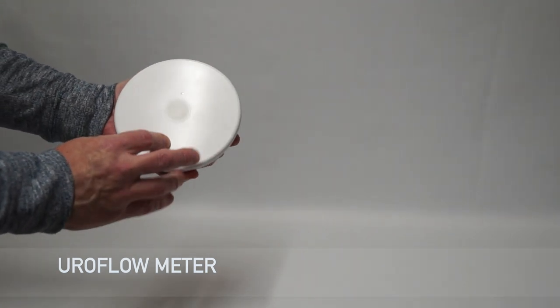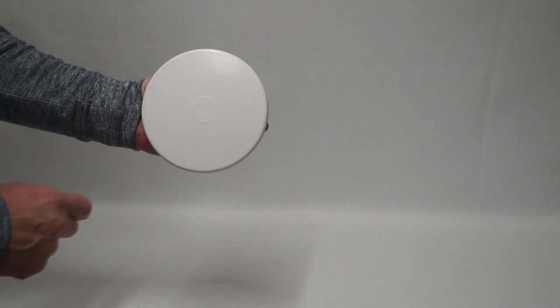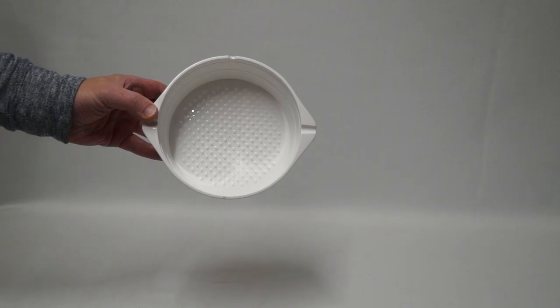The heart of the system is the flow meter. This measures the weight and hence volume of urine that is passed over time, much like how accurate kitchen scales work.